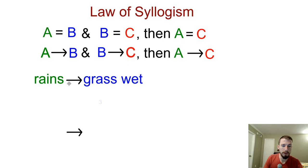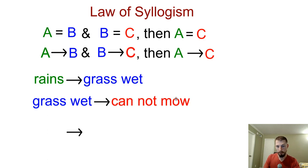So let's do an example. So if it rains, the grass will get wet. And if the grass gets wet, then you can't mow because the grass is wet and it won't cut. It's just going to make a mess. So can we make a conclusion? So if it rains, the grass gets wet, and when the grass is wet, you can't mow. So we can make our conclusion that if it rains, then we conclude that we cannot mow.